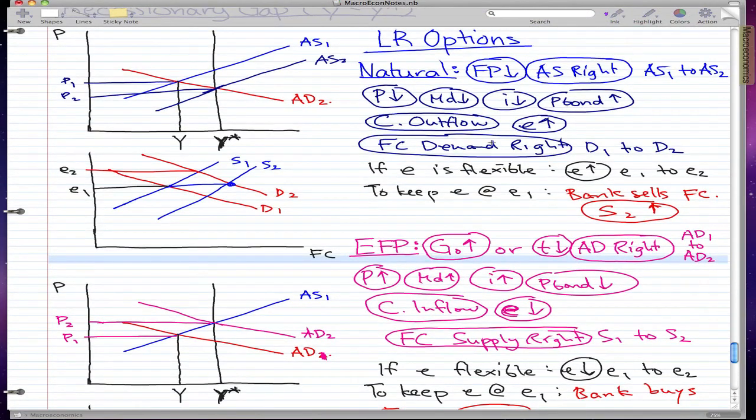So money's flowing out. Everything is the same as the natural way of fixing a recession. There's capital outflow, and then our domestic currency depreciates because people want the foreign currency. So foreign currency demand moves right from D1 to D2.